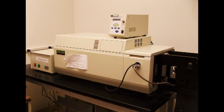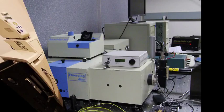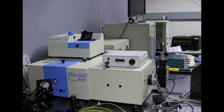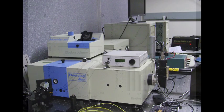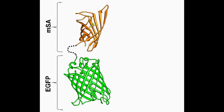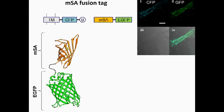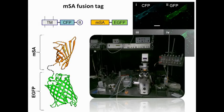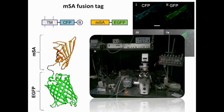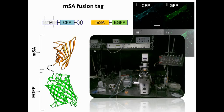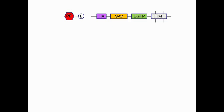The protein was then analyzed by circular dichroism and fluorescence polarization spectroscopy to obtain a denaturation temperature of 60 degrees Celsius and a dissociation constant of 2.8 nanomolar. We also fused the monomer to GFP to create a bifunctional molecule that is fluorescent and binds biotin, and demonstrated that it can bind a biotinylated cell surface receptor without aggregating it.